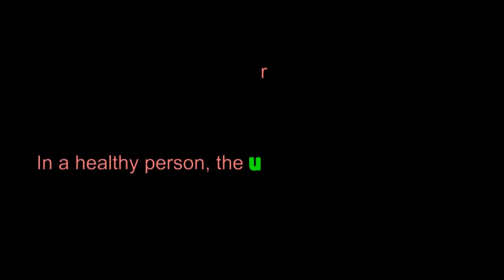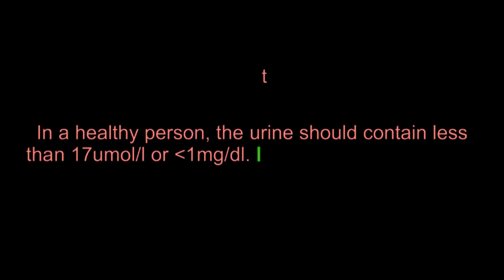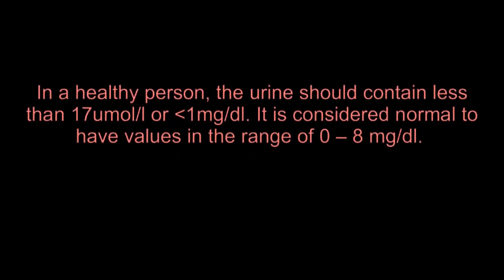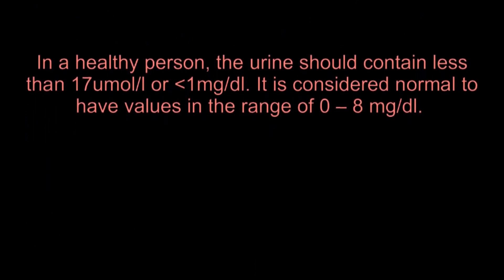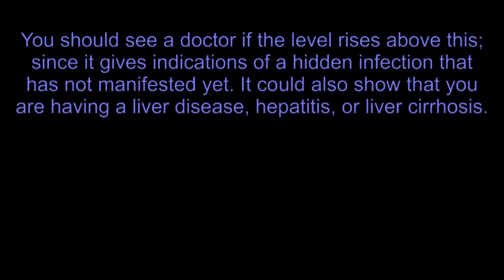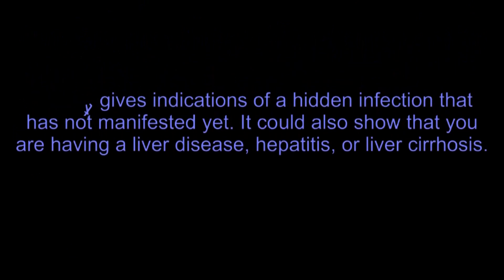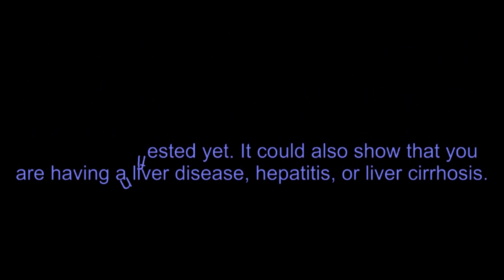In a healthy person, the urine should contain less than 17 micromoles/L or less than 1 milligram/dL. It is considered normal to have values in the range of 0 to 8 milligrams/dL. You should see a doctor if the level rises above this, since it gives indications of a hidden infection that has not manifested yet. It could also show that you are having a liver disease, hepatitis, or liver cirrhosis.